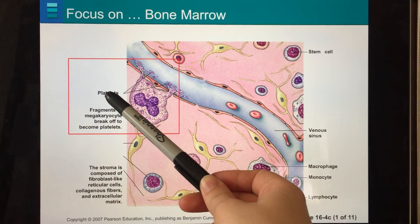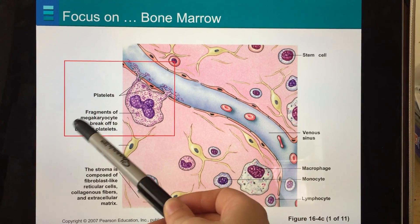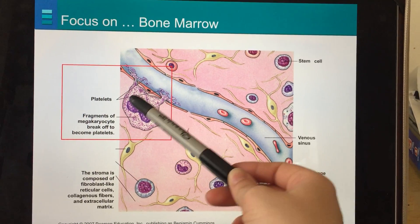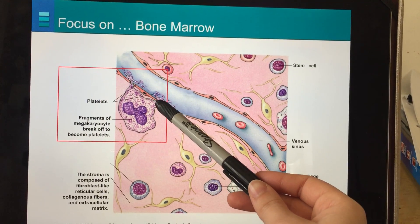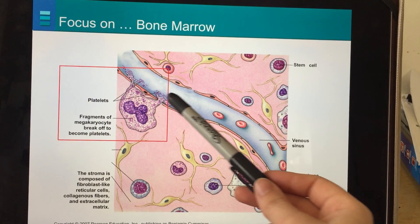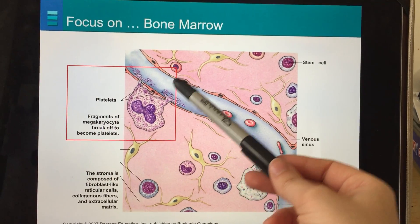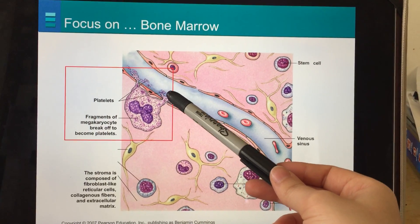If you remember, platelets are portions of megakaryocytes. Here you can see a megakaryocyte, a really big cell, and little portions of the cell break off into the bloodstream. These are platelets or thrombocytes.